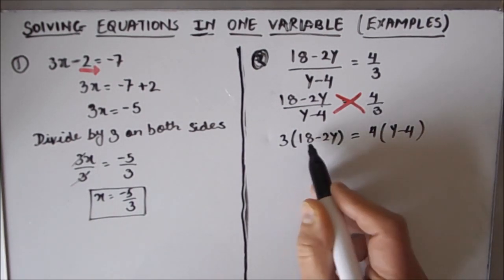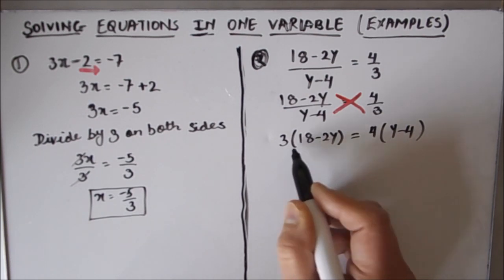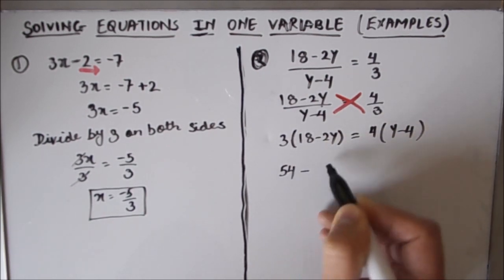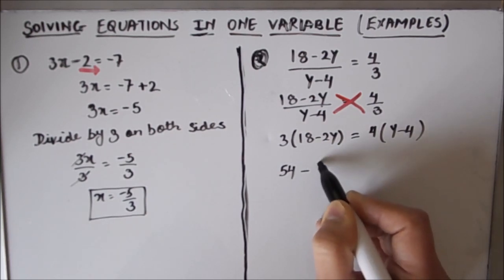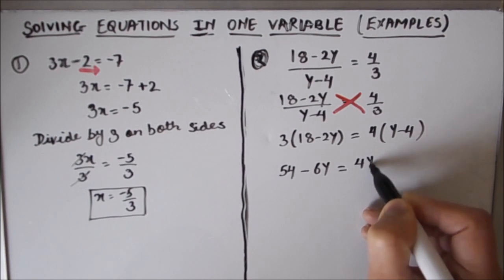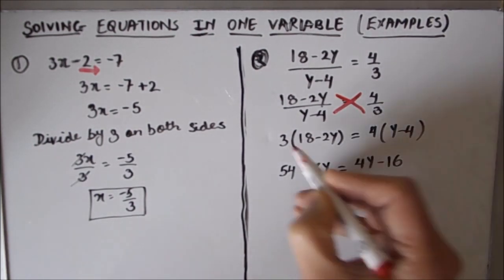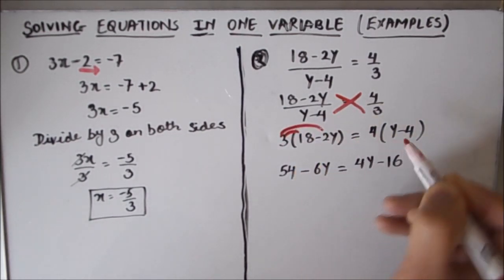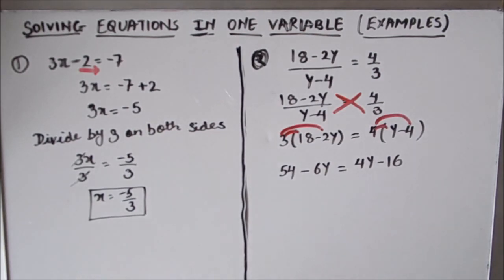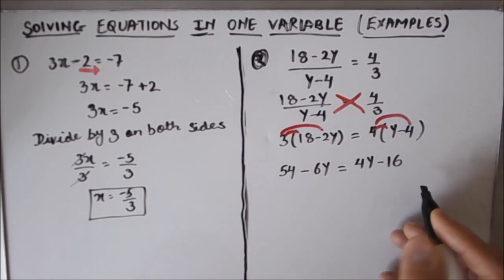Now we are going to distribute 3. So this will be 18 times 3 is 54, minus 3 times 2y is 6y, equals 4y minus 16, after distributing.